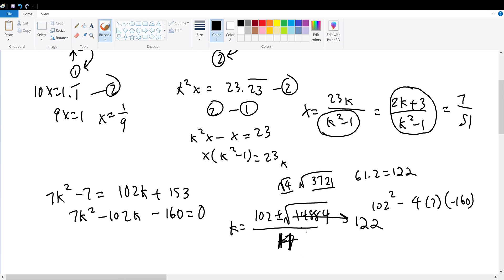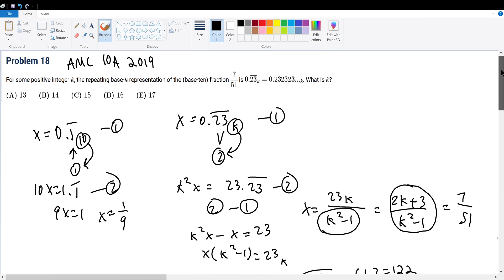And we're going to take the plus, because if we subtracted, k will be negative, and no base can be negative. So k will be equal to 102 plus 122 over 14. This becomes 224 divided by 14. We can divide 2 on both sides. So 112 divided by 7 will give us 16. So the base representation of k that this repeating decimal converges to 7 or 51 will be base 16, giving us answer choice D.